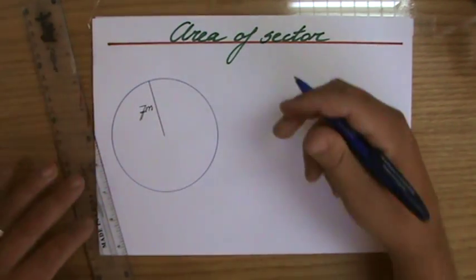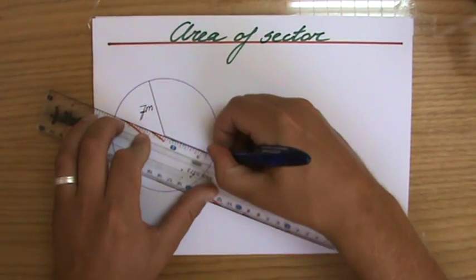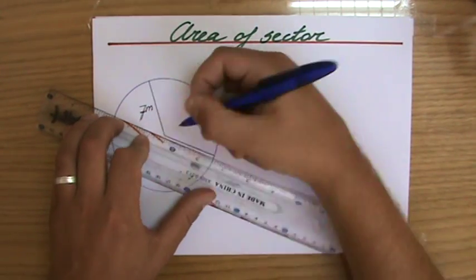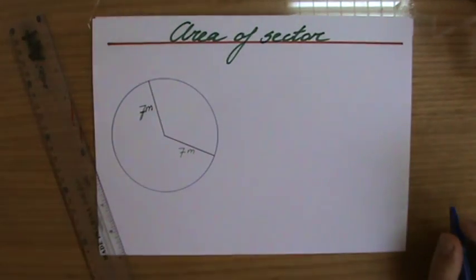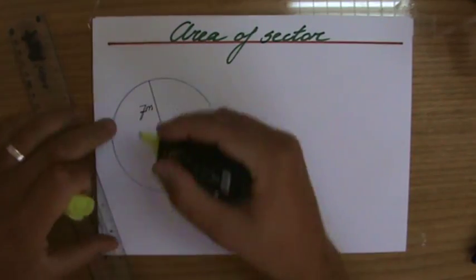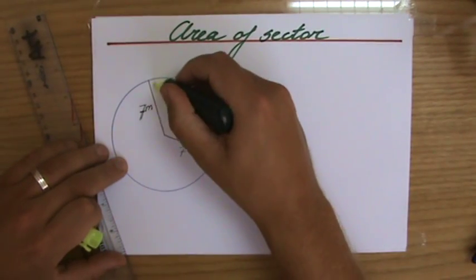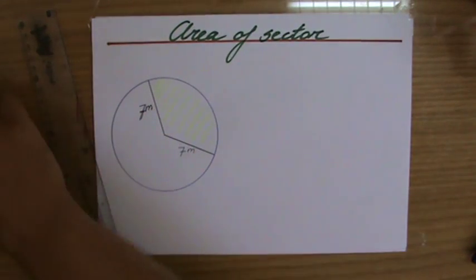A sector is a part of a circle enclosed by two radii. So this is another radius, that is of course also seven meters. And then we have the minor sector, which is the smaller part of the two. This would be the minor sector.